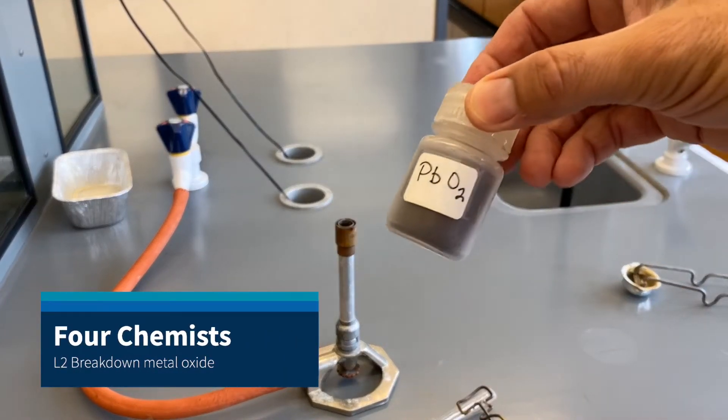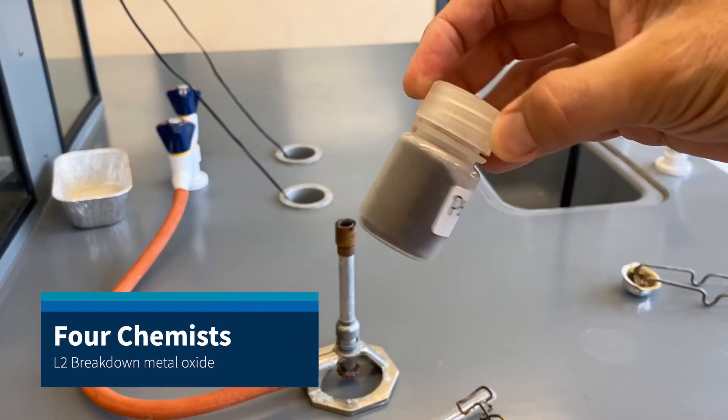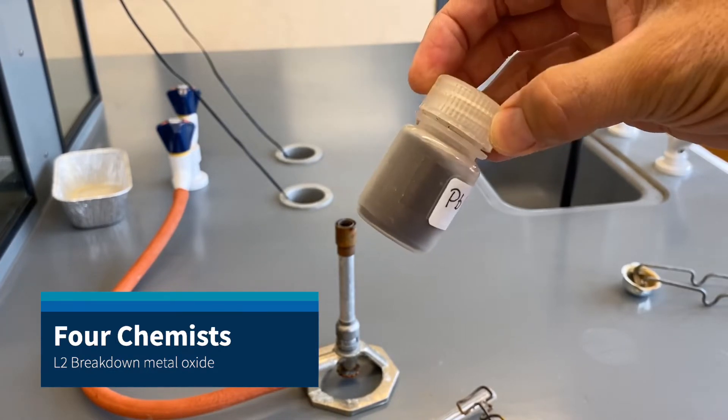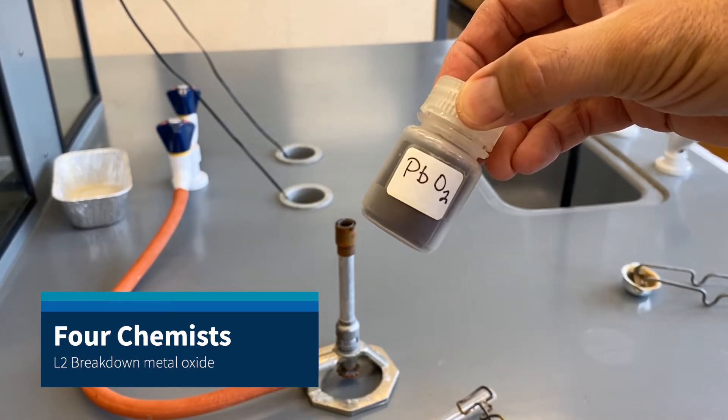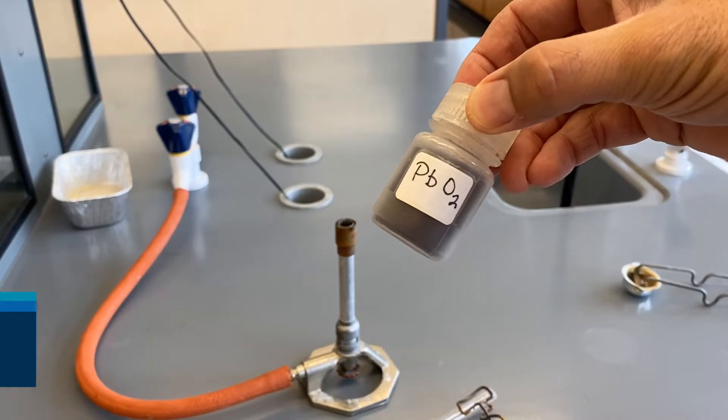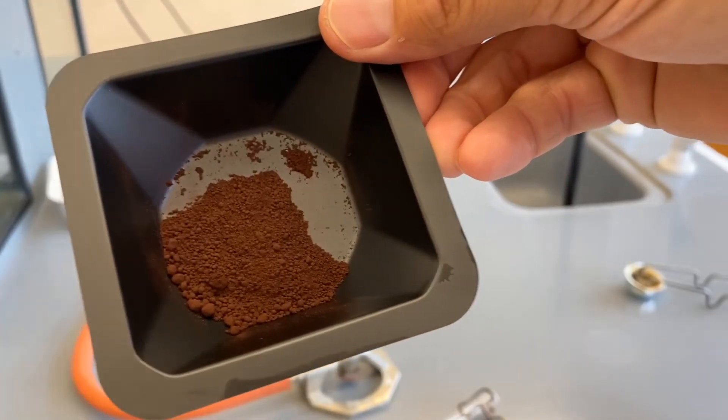Okay, so the first demonstration is going to involve this compound, lead for oxide. Pour some out so that you can see what it looks like. It has a very reddish brown color to it.